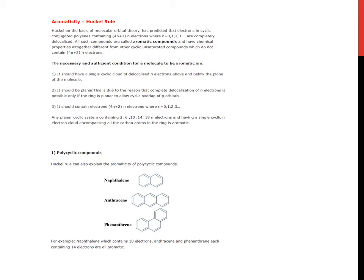Third point, it should contain electrons 4n plus 2 pi, where n equals 0, 1, 2, 3 and so on. Any planar cyclic system containing 2, 6, 10, 14, 18 pi electrons and having a single cyclic pi electron cloud, then it is aromatic.